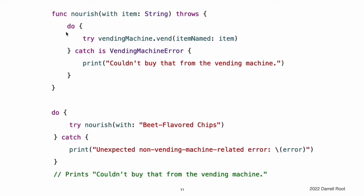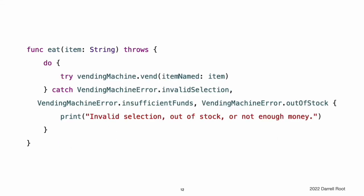The above example could be written so that any error that is not a VendingMachineError is instead caught by the calling function. In the nourish(with:) function, if vend(itemNamed:) throws an error that is one of the cases of the VendingMachineError enumeration, nourish handles the error by printing a message. Otherwise, nourish propagates the error to its call site. The error is then caught by the general catch clause.